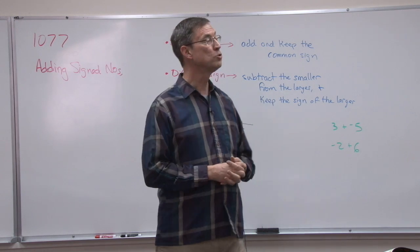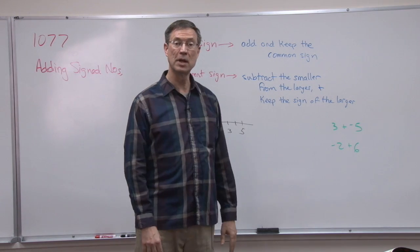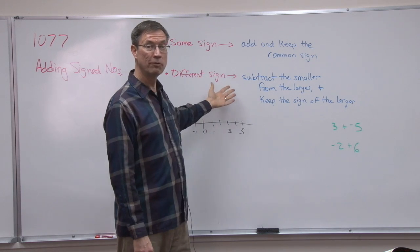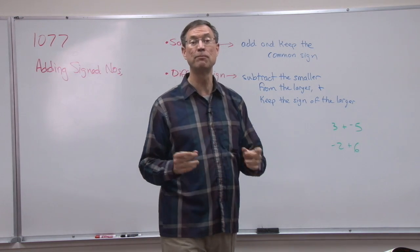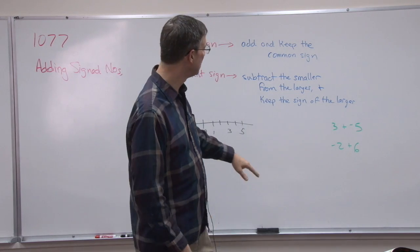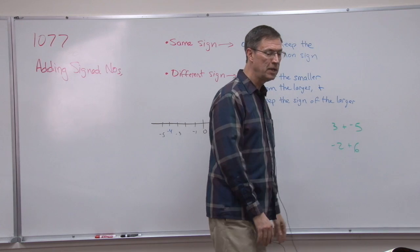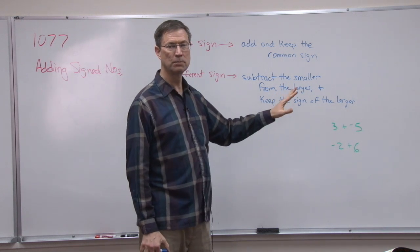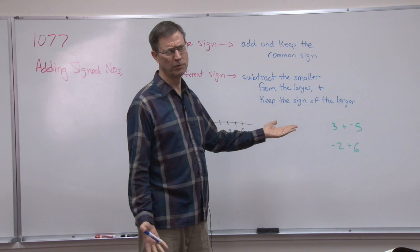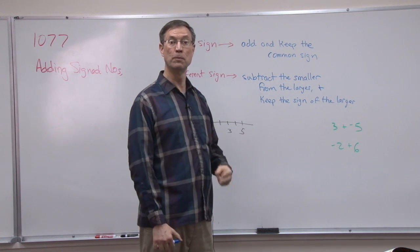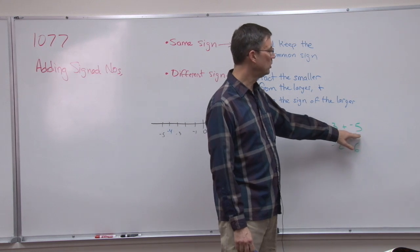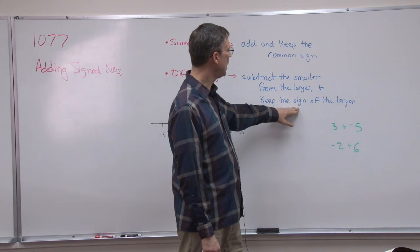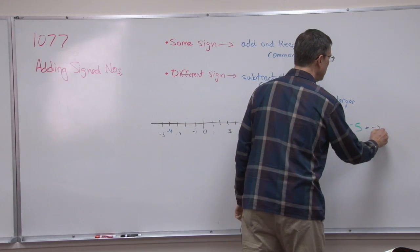Let's go over both rules. Adding when the signs are the same: add and keep the common sign. Adding when the signs are different: subtract the smaller from the larger, keep the sign of the larger. Let's illustrate with this problem: three plus negative five. Just follow the rule — three is smaller than five, so subtract three from five to get two. Five is the larger, and it was negative, so keep the negative. The answer is negative two.